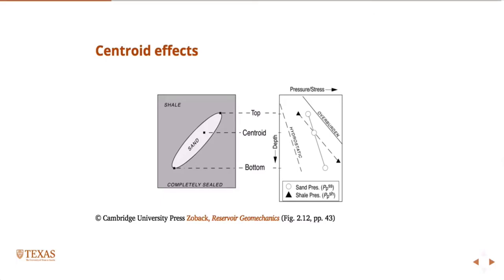If it's in a completely sealed shale layer and tilted in some way, the pressure in the shale will increase at approximately lithostatic, approximately close to the vertical stress. But in the sand where it's well connected, you'll have an area of pore pressure that increases hydrostatically, and the point where they meet each other is called the centroid, this point at the center.